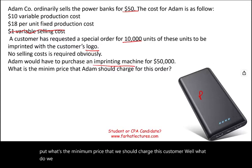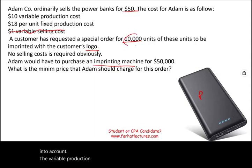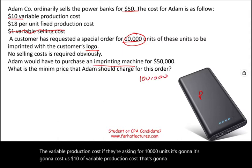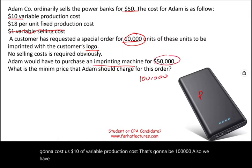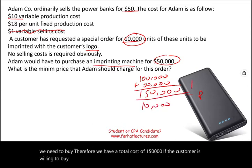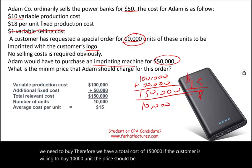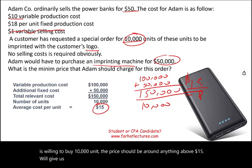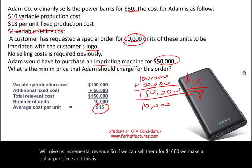We have to take into account the variable production cost. For 10,000 units at $10 each, that's $100,000. We also have to recover the $50,000 cost of the imprinting machine, giving us a total cost of $150,000. If the customer is buying 10,000 units, the minimum price is $15 per unit — anything above $15 gives us incremental revenue. For example, selling at $16 means we make $1 per piece. Incremental revenue must be greater than incremental cost.